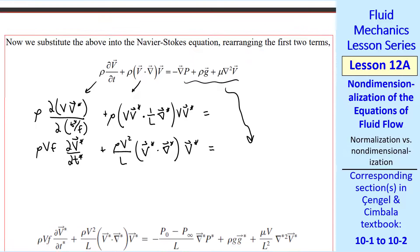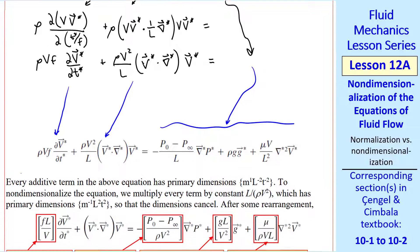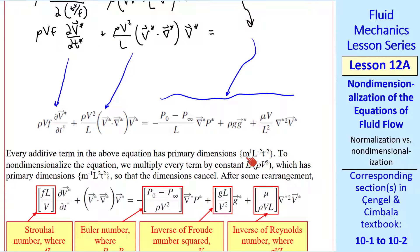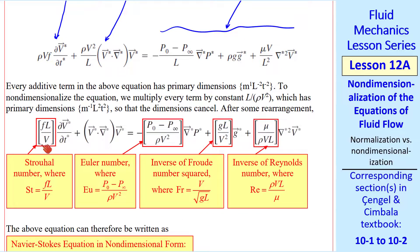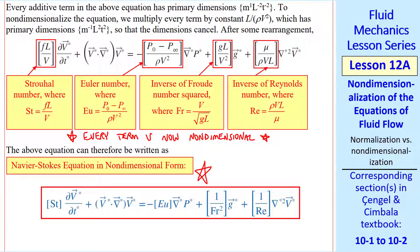When we put it all together we get five terms. Since every additive term has primary dimensions m/(l²·t²), we multiply through by l/(rho·V²) to non-dimensionalize. Now all dimensions have canceled, and we end up with four non-dimensional parameters: the Strouhal number (fl/V), the Euler number, the inverse of the Froude number squared (gl/V²), and the inverse of the Reynolds number (mu/(rho·V·l)). I rewrite the non-dimensional Navier-Stokes equation with these four non-dimensional parameters.